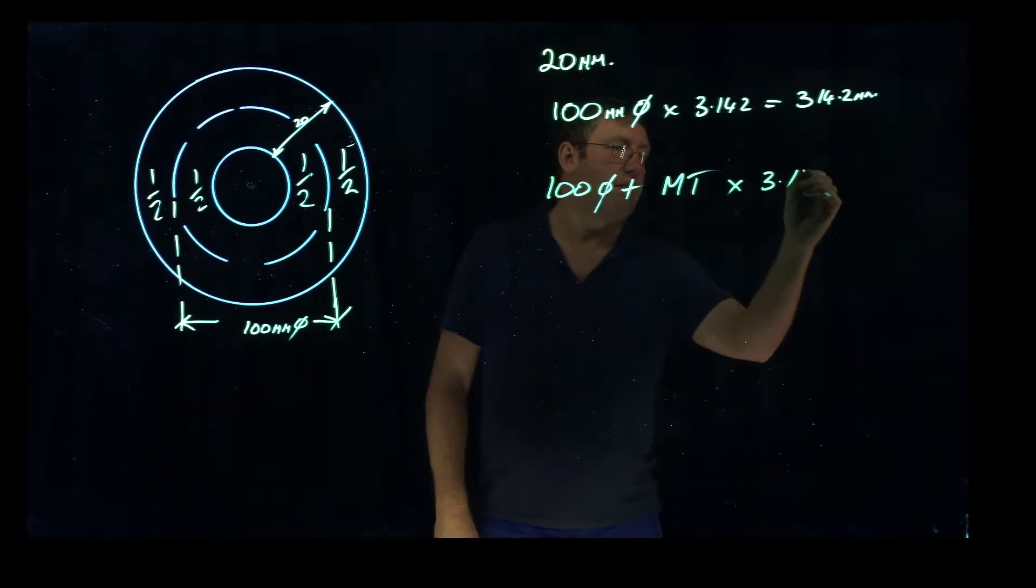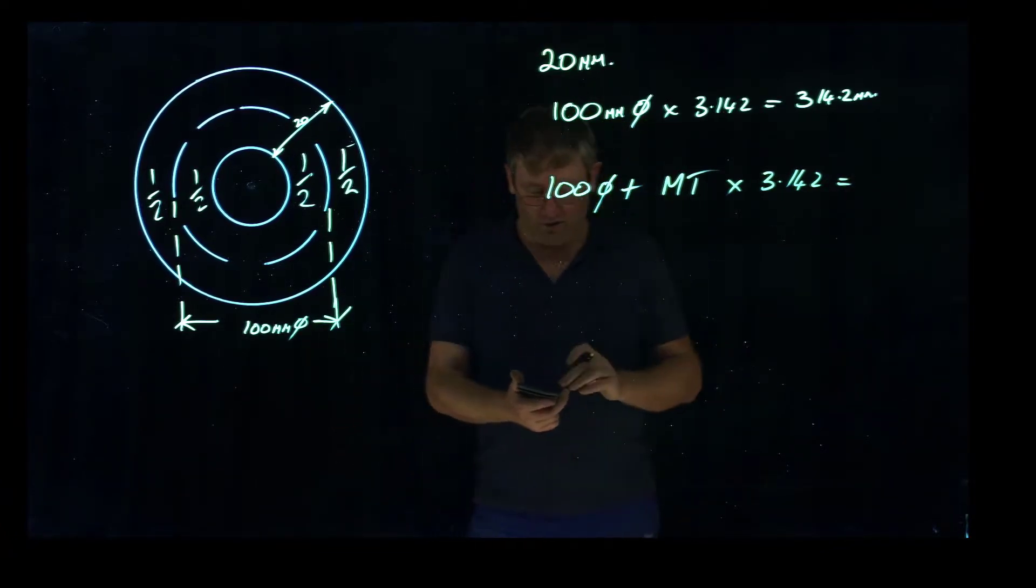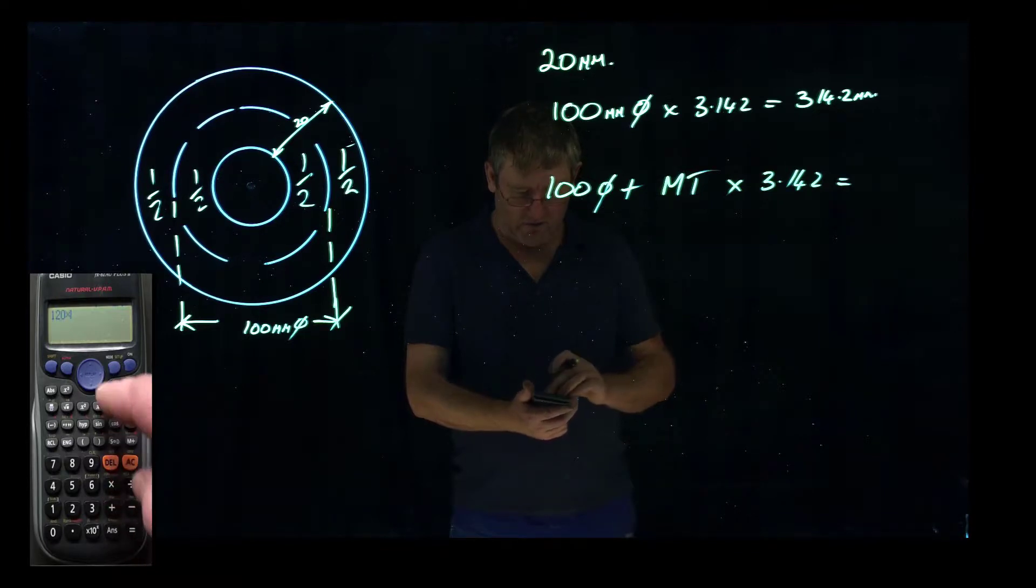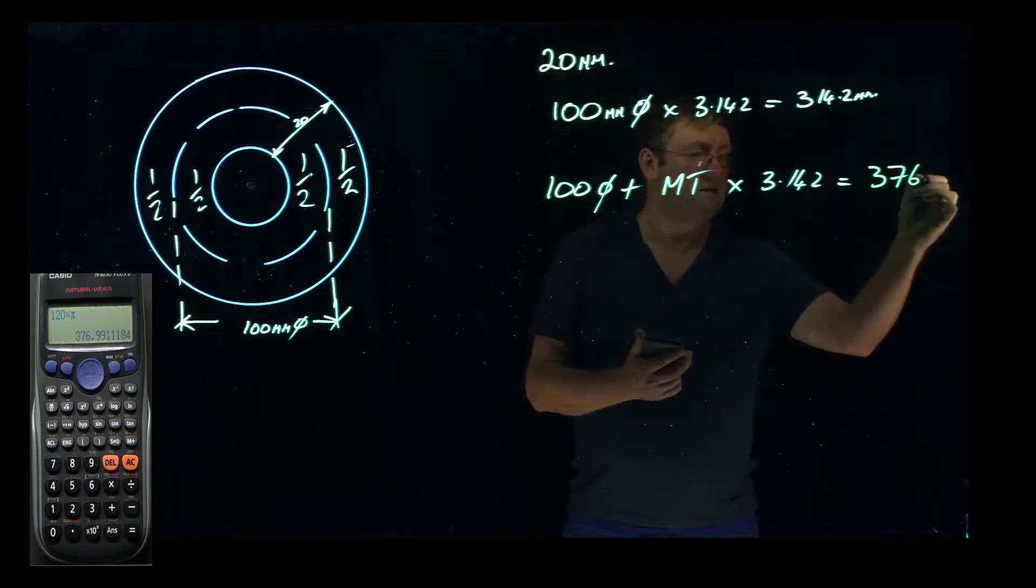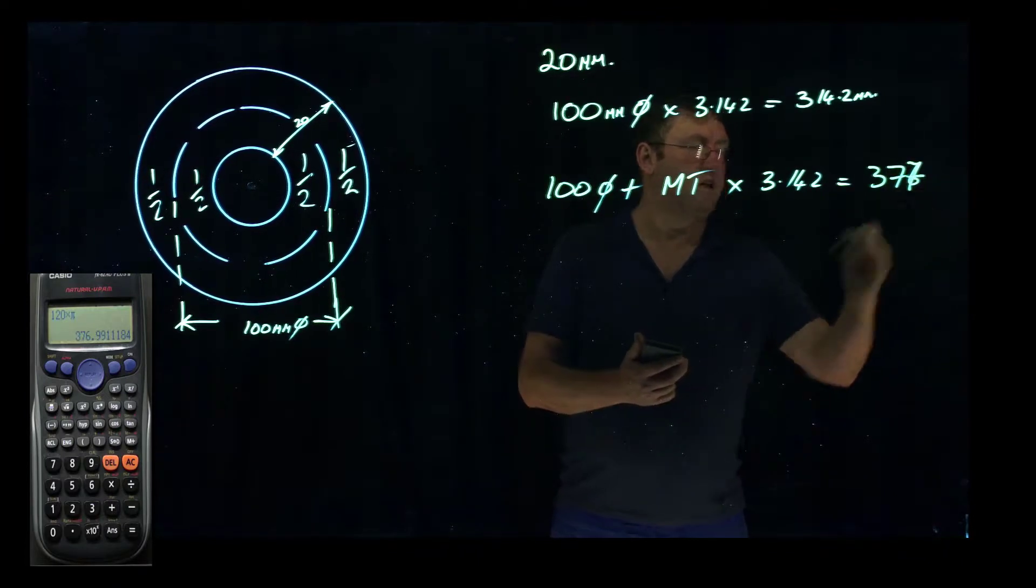So now we have 120mm, because we'll be using 20mm thick steel. On the calculator times pi, gives me a cut size here of 376, it's actually 0.99, so I'm going to go 377.